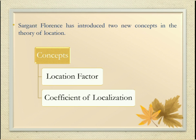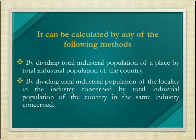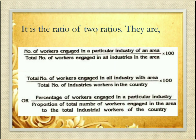He has introduced two new concepts in the theory of industrial location. First, the Location Factor — an index of the degree of concentration of an industry in a particular place. It refers to the percentage of all workers in a particular industry found in a certain region relative to the percentage of all workers in that industry nationally. It can be calculated by dividing the total industrial population of a place by the total industrial population of the country, or by dividing the total industrial population of the locality in the industry concerned by the total industrial population of the country in the same industry. It is the ratio of two ratios.